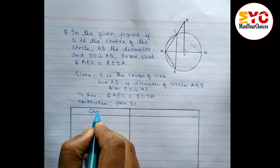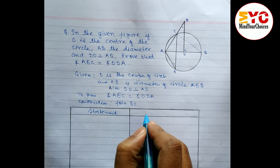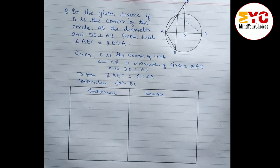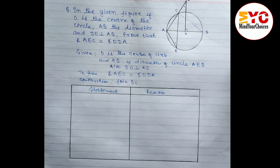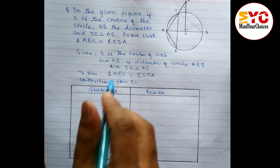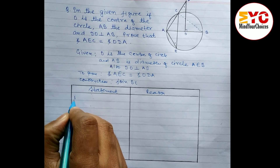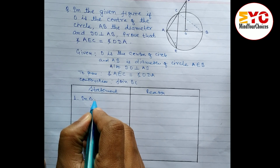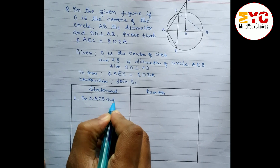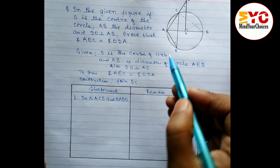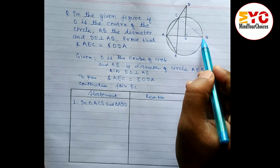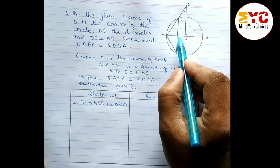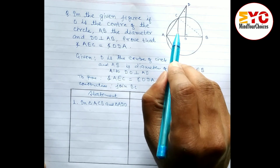Now we write our statement and reason. We need to follow the rules of circles and prove two angles are equal. We consider triangle ACB and triangle ADO. We look at these two triangles in the diagram properly.